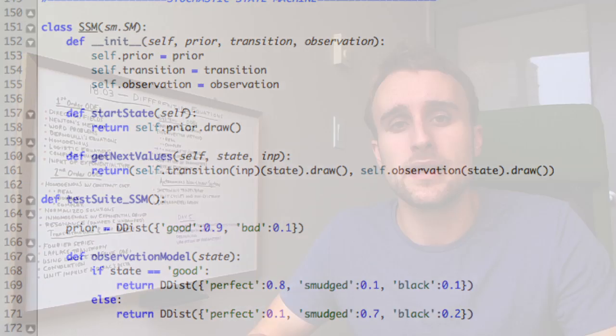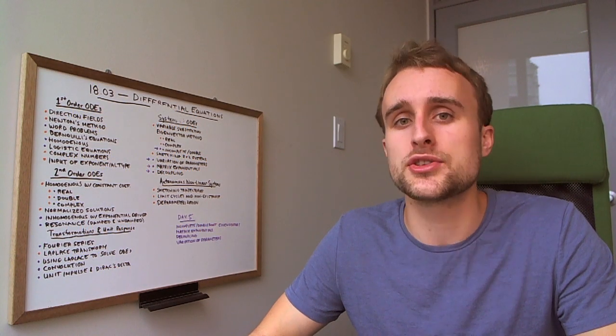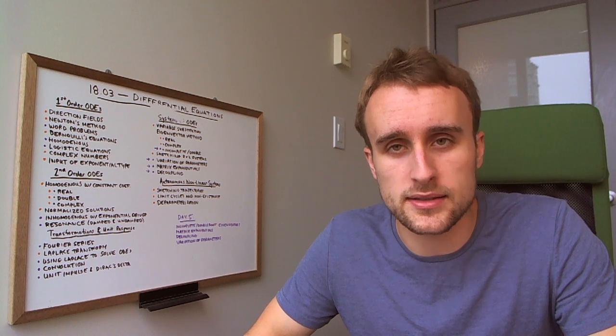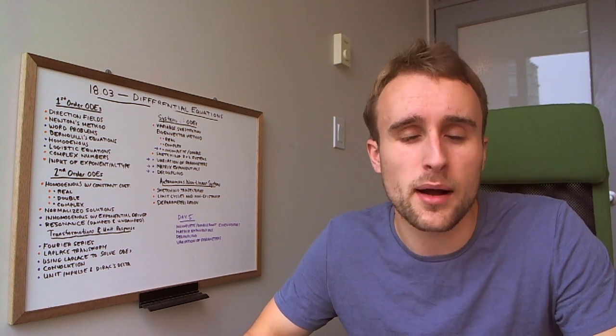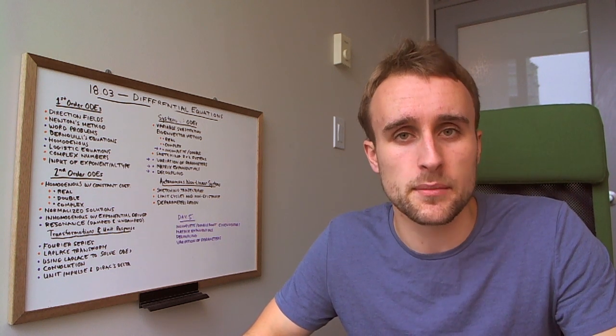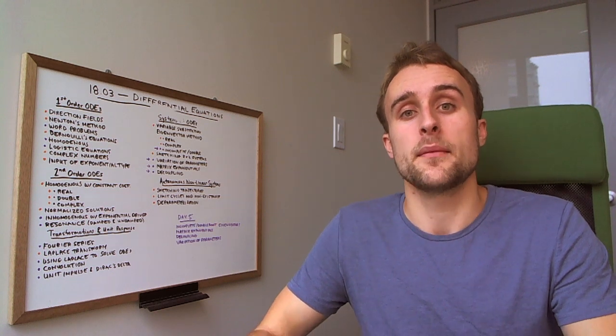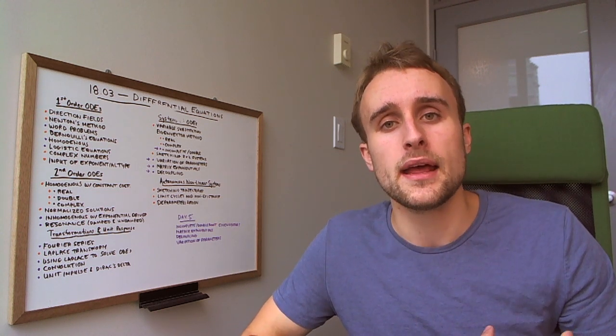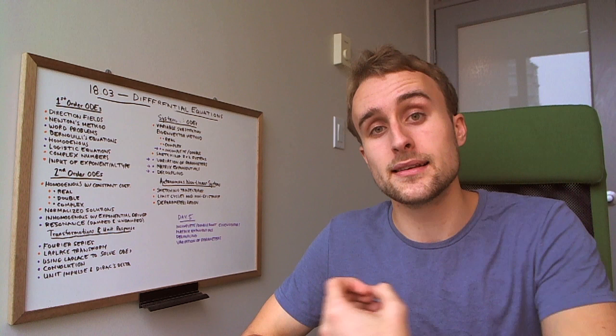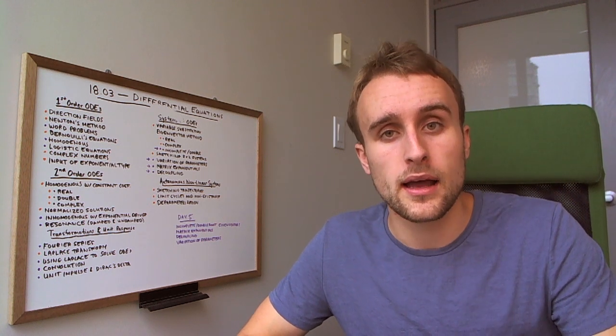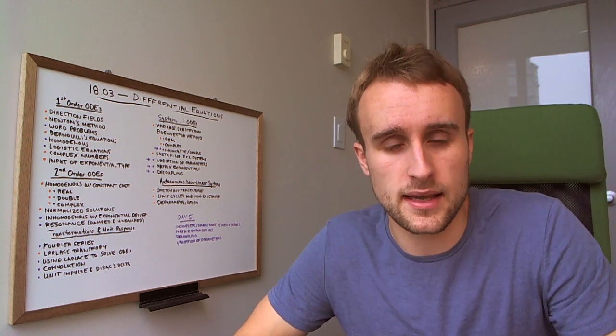So in this example here, you have a copy machine, which randomly breaks down at certain points in time. And even when it's working properly, it gives kind of bad copies some of the time. And you have this Bayesian state estimator, which is separate from it, and it tries to predict, is the copier working properly based on the type of output that it's getting?